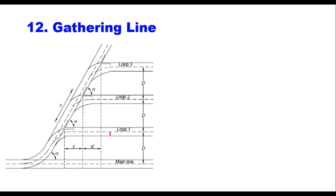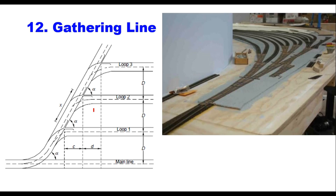A gathering line is a sloping line from which a number of parallel tracks are taken off. It is provided in yards to serve various requirements. The angle which the gathering line makes with the parallel sidings is known as the gathering angle or gathering line angle, and it equals the angle of crossing adopted in the yard. From the main line, as it approaches a station or yard, several turnouts are taken off and all run parallel at the same angle.